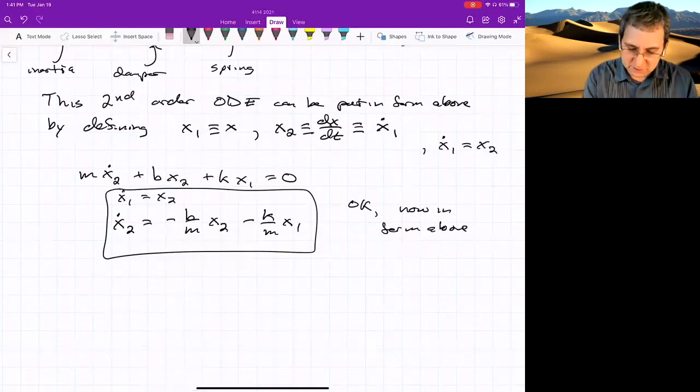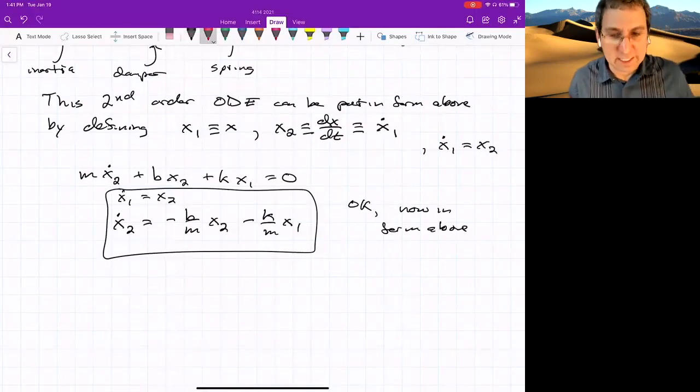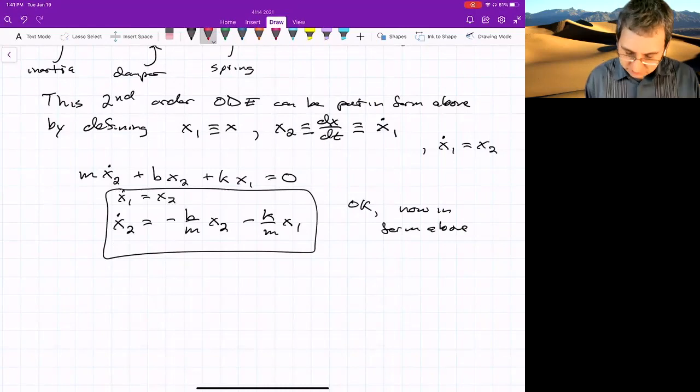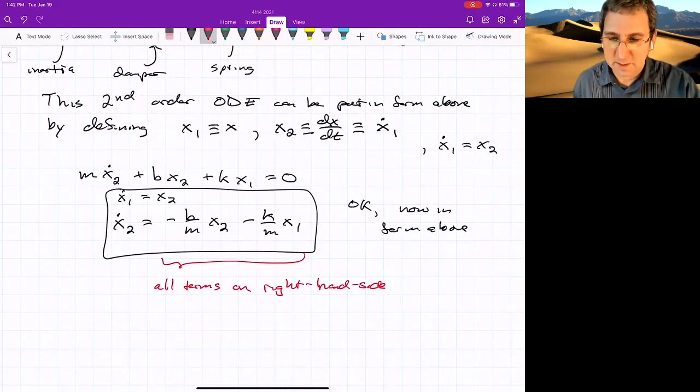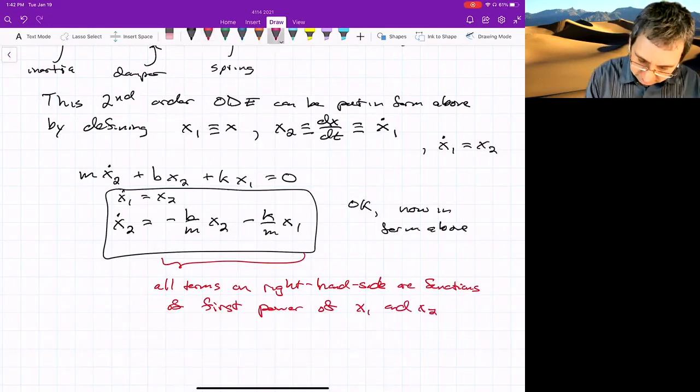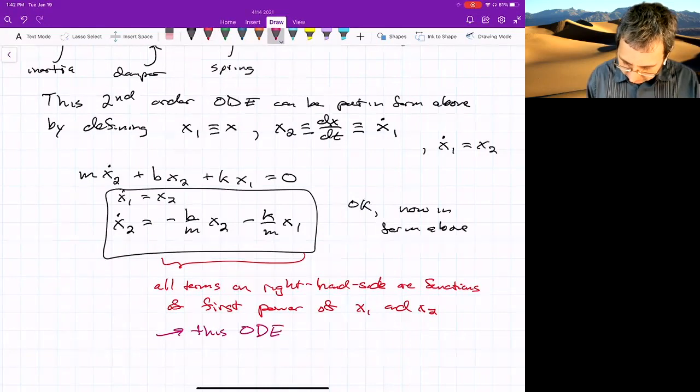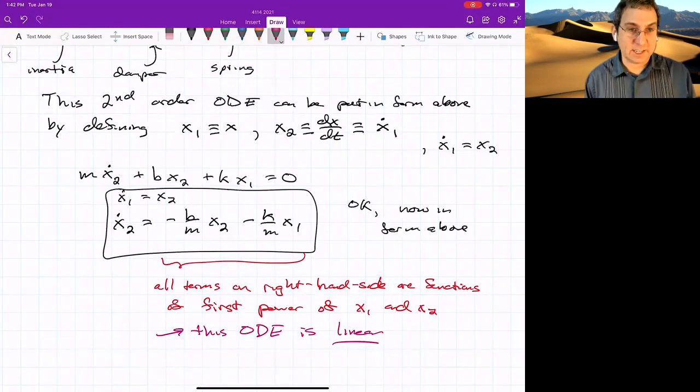And this system is said to be linear because all of the terms here on the right-hand side are just functions of the first power. So if that's the case, then that means this ODE is said to be linear. Because the right-hand side is linear in x1 and x2.